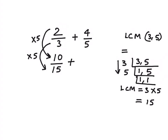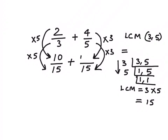Similarly, we'll convert 4 by 5 into its equivalent fraction. We know that we need to get 15 in the denominator. So what number multiplied by 5 is 15? It's 3. So we need to multiply the numerator with 3 as well, so we'll get 12 in the numerator. Now we have converted both these fractions into like fractions, and adding like fractions is simple. We'll just copy the denominator which is 15 and add the numerators. So the answer is 22 by 15.